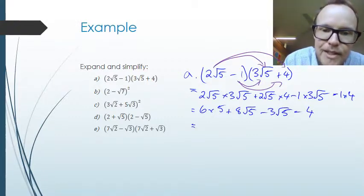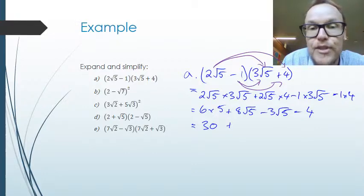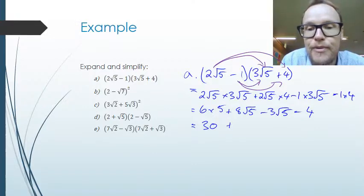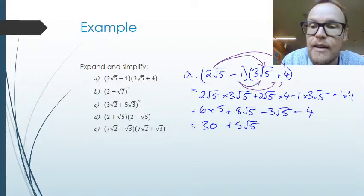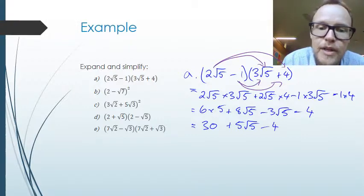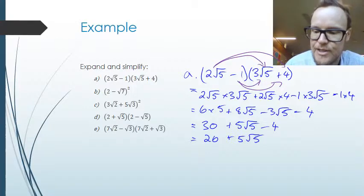Simplifying and collecting like terms: I get 30. I've got 8 root 5s and I take away 3 root 5s, so that's 5 root 5s. Then I take away 4. Collecting like terms gives 26 plus 5 root 5, which is our answer to part A.